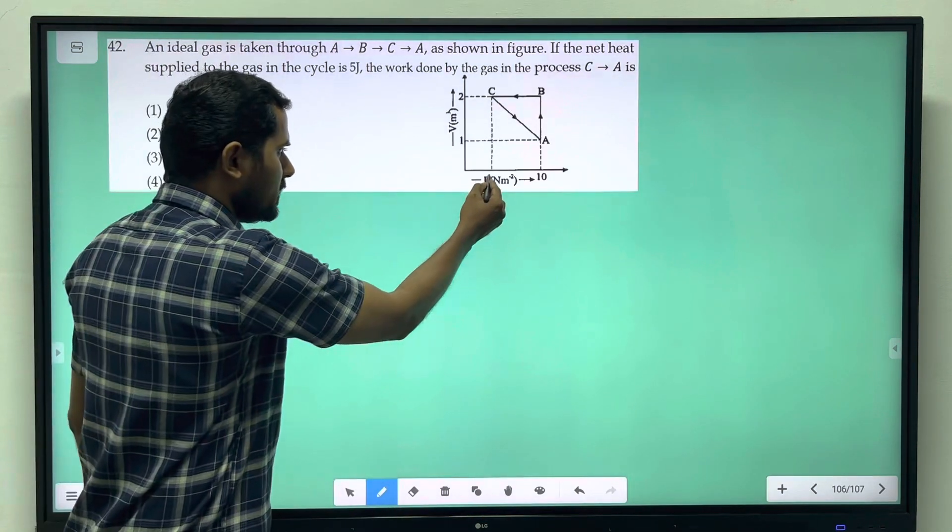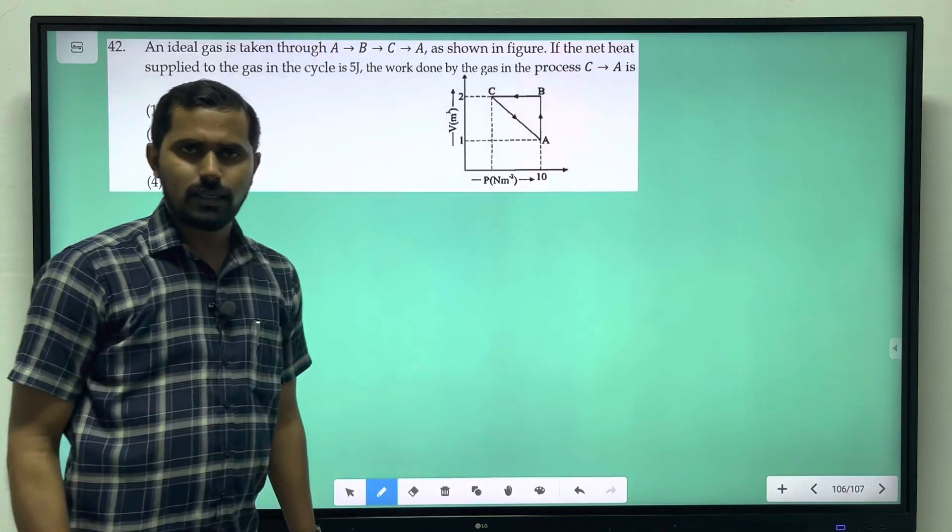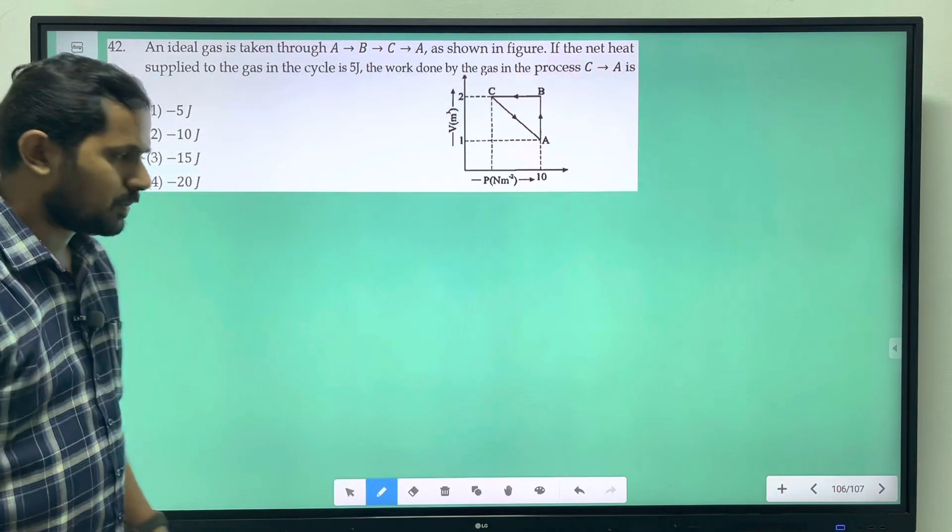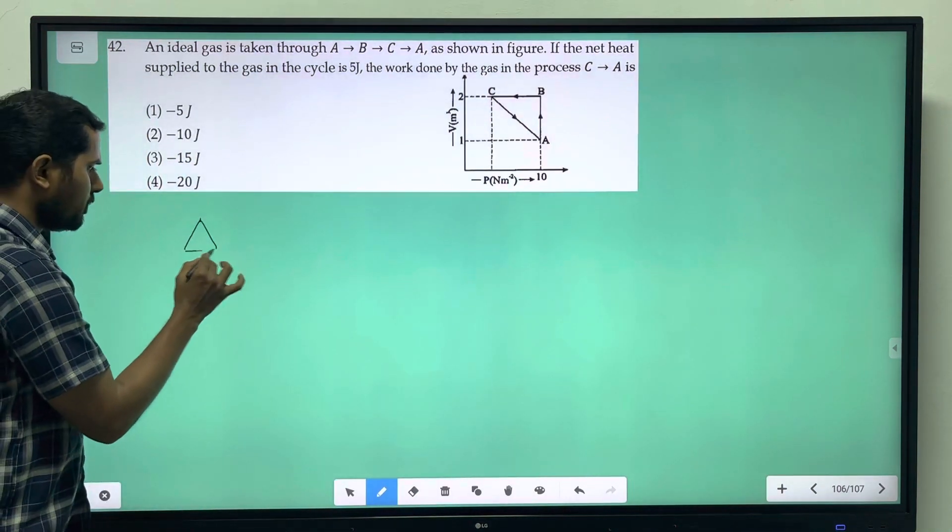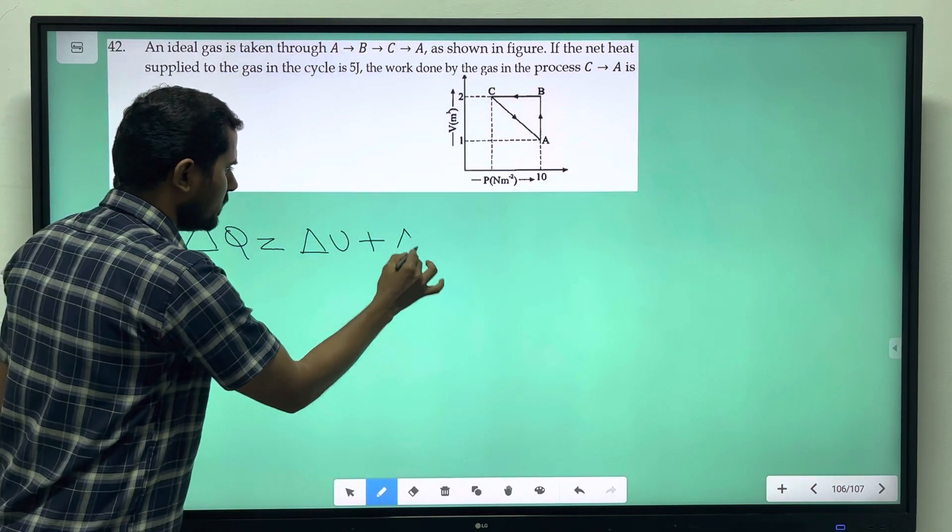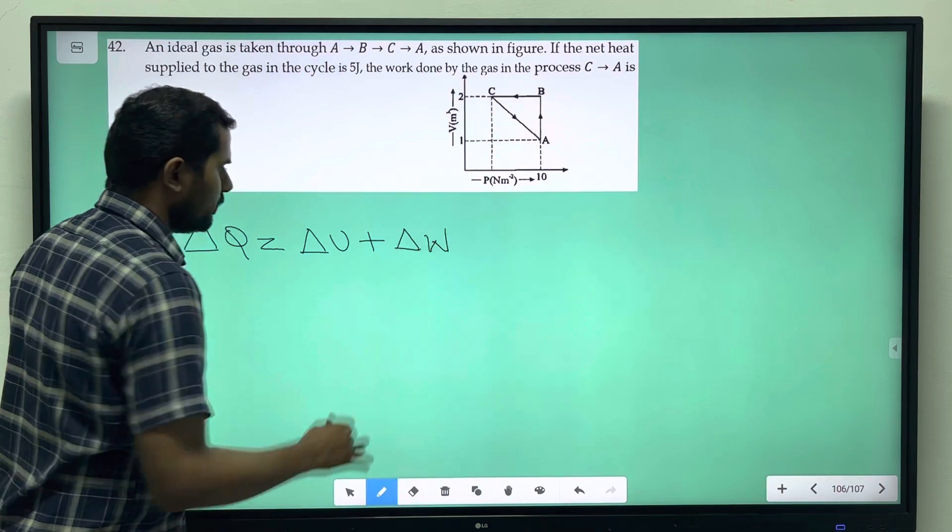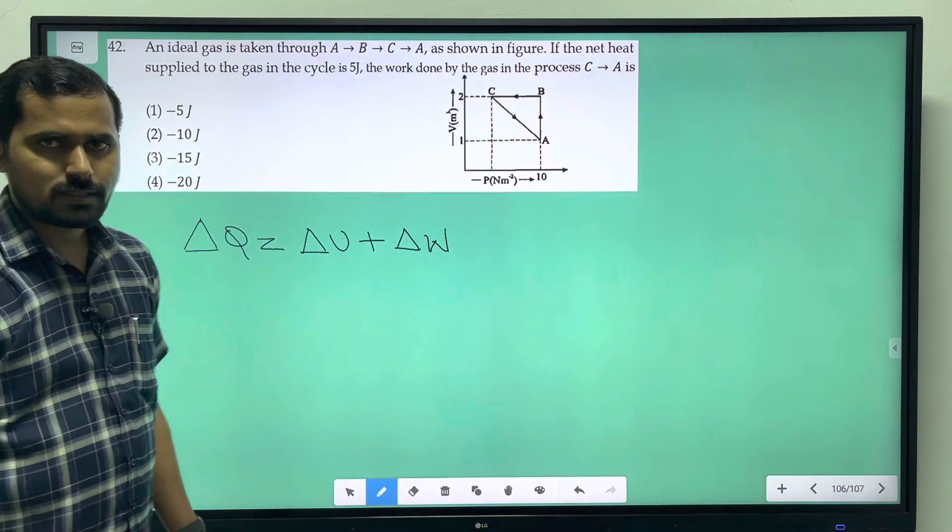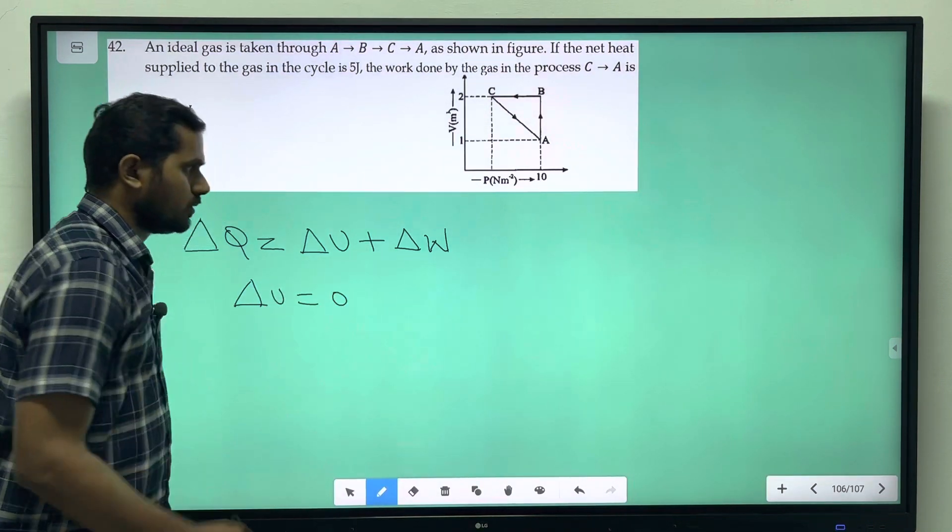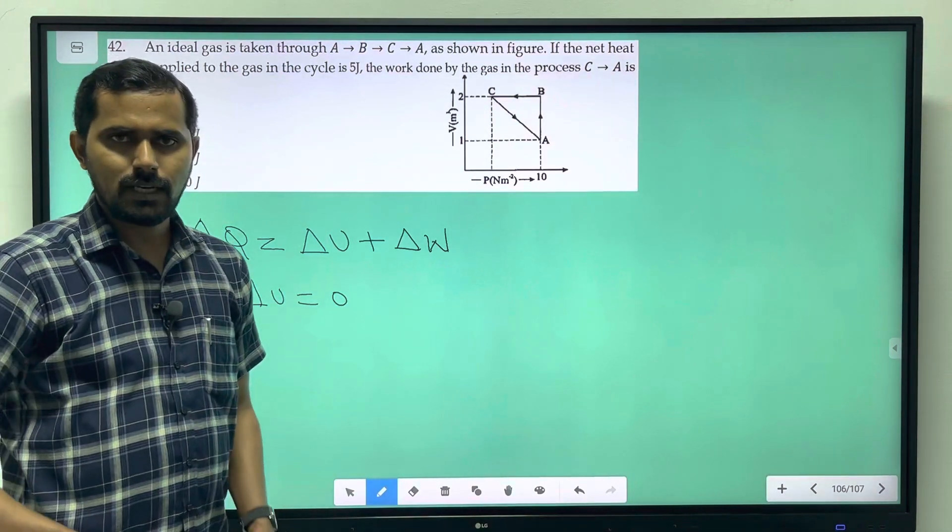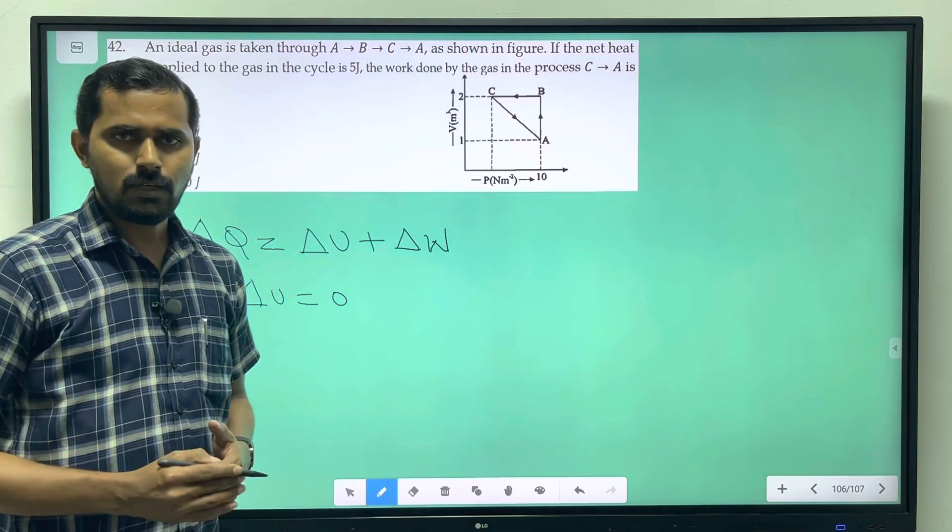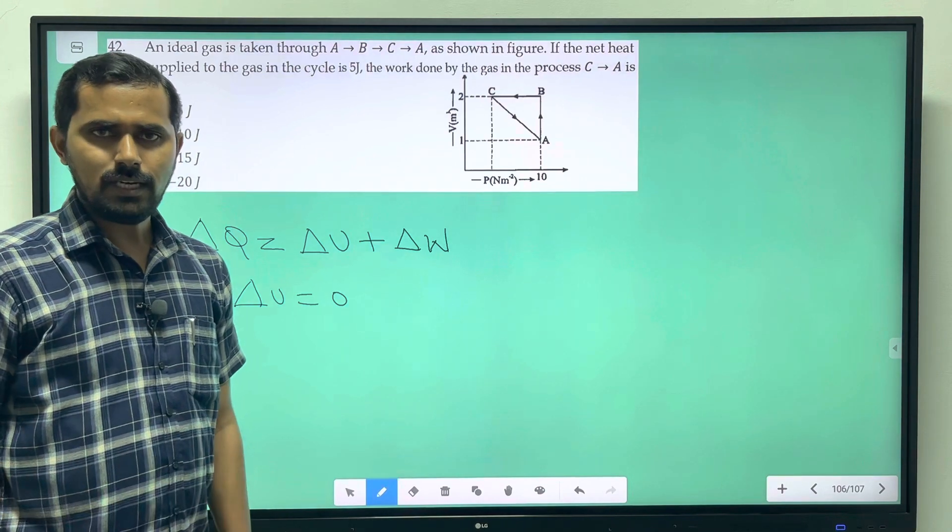We will find out using the first law of thermodynamics: ΔQ = ΔU + ΔW. ΔU is equal to 0 for a cyclic process since the final internal energy and initial internal energy are the same. So, there is no change in internal energy.